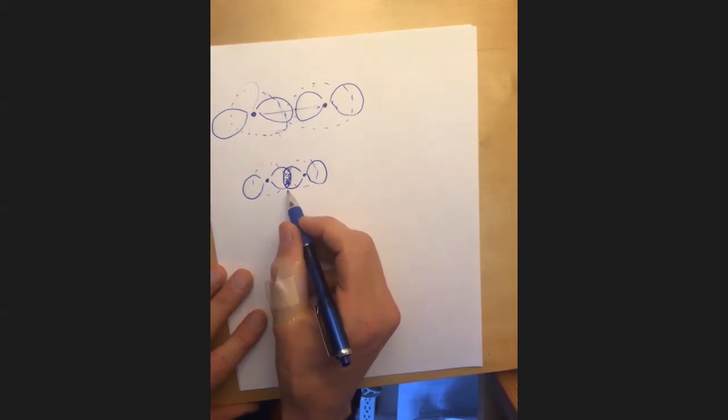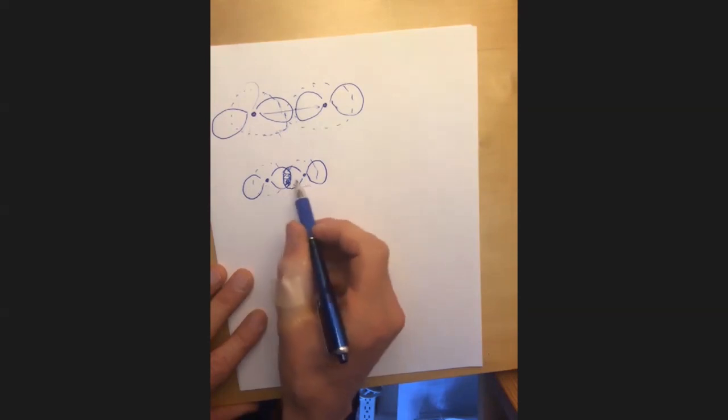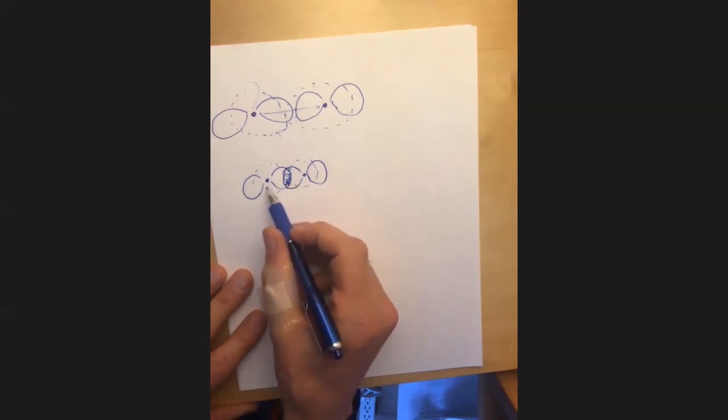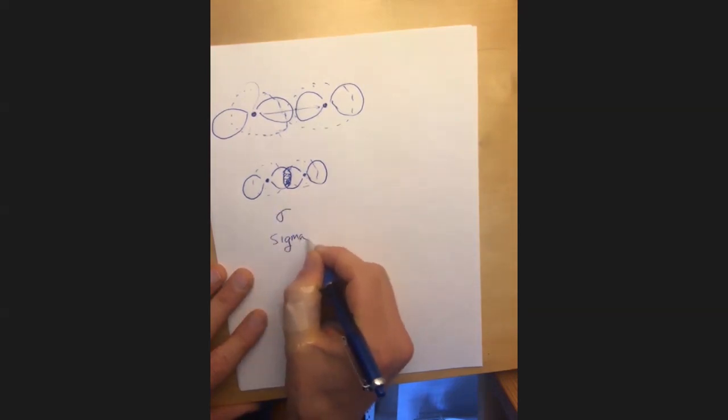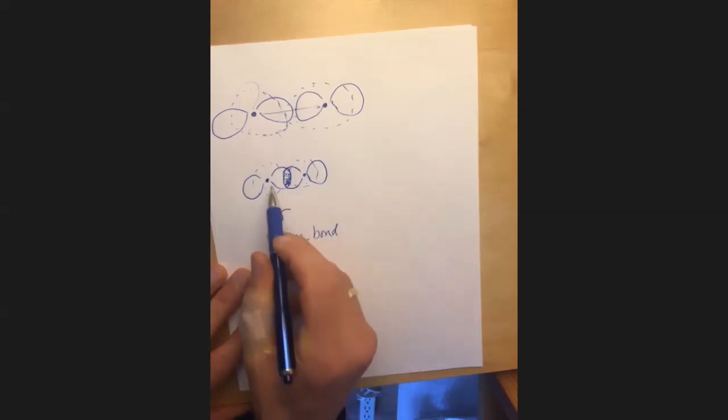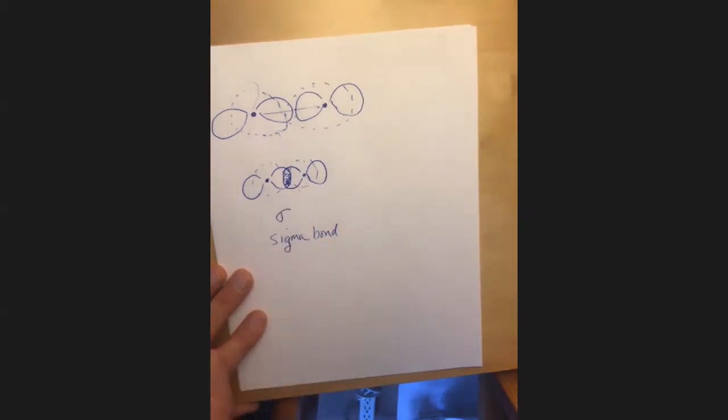And so this overlap here along those P orbitals, it's a sigma bond because it is directly down the orbital, directly down the bond axis between this first atom and the second atom. And so, any time we can arrange orbitals such that they overlap conveniently directly down between the two atoms, that's a sigma bond. Okay. So what was your question? Cause this is a different question I answered. Remind me what your question was.